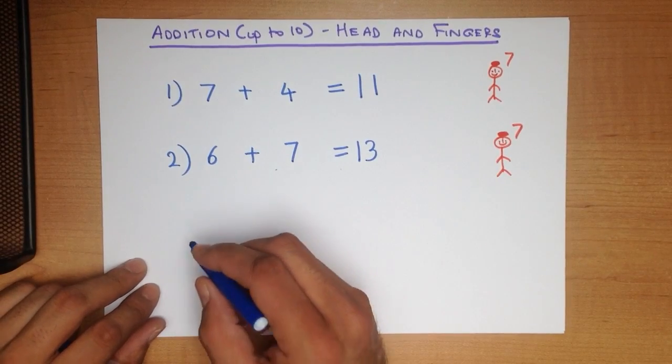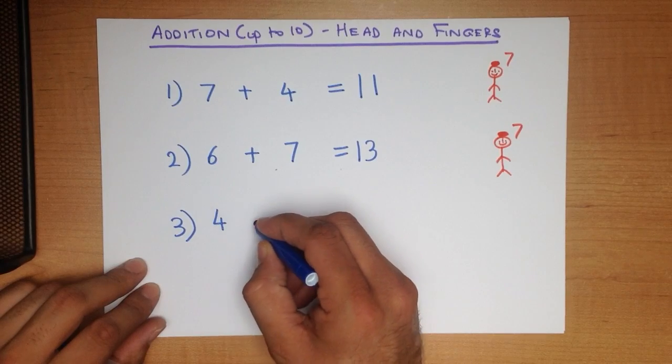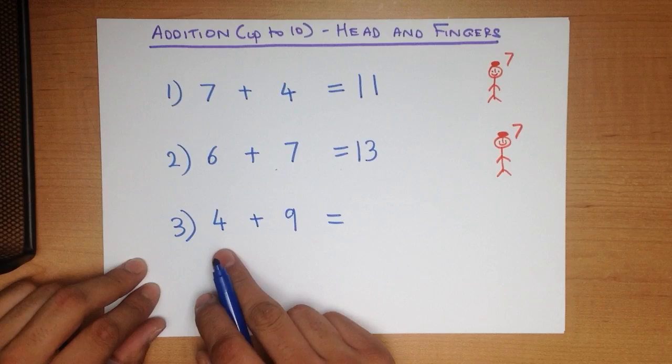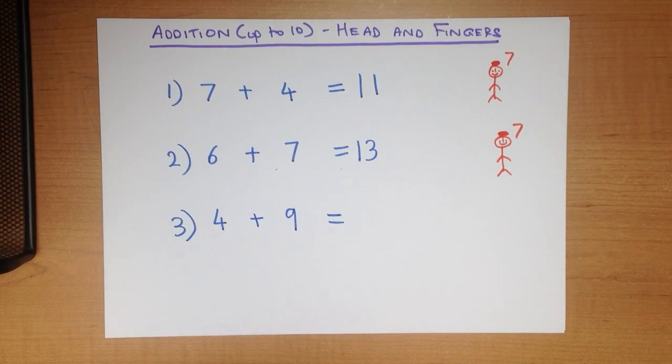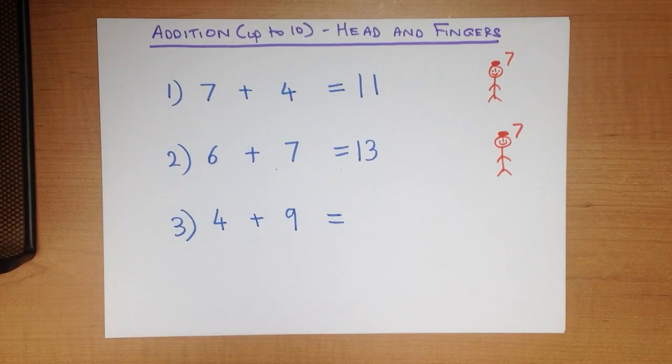Now let's work through one more example. What is 4 plus 9? Now let's do this again with the head and fingers method. I am not going to draw the stick figure this time.